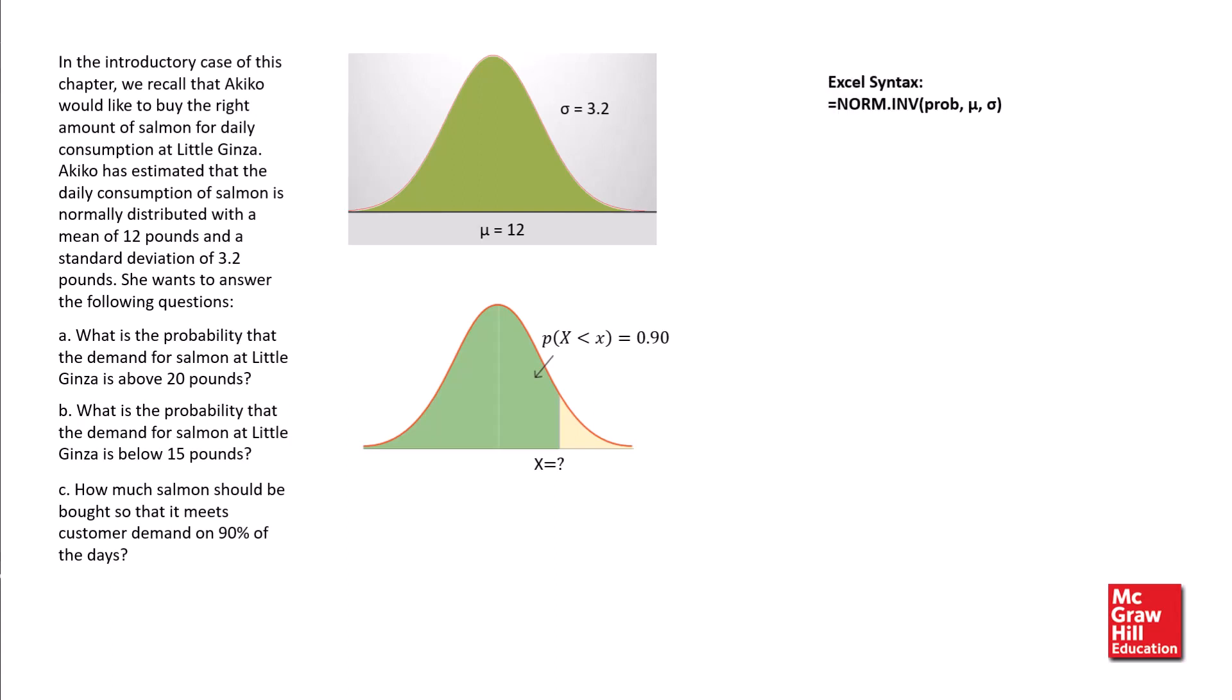In Excel, we use the NORM.INV function. This function has three arguments, namely, the cumulative probability, the population mean, and the population standard deviation. Substituting the values 0.9, 12, and 3.2, respectively into the function,